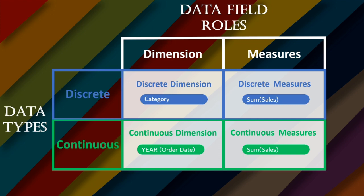Here are examples for each. Category shown in blue is a Discrete Dimension. Some cells shown in blue color represent a Discrete Measure. Year of Order Date shown in green is a Continuous Dimension — note there is no aggregation on Order Date, and Year is only a function, not an aggregation. Some cells in green color showing an aggregation represent a Continuous Measure.